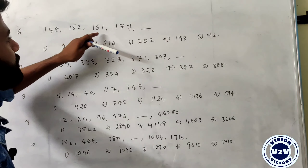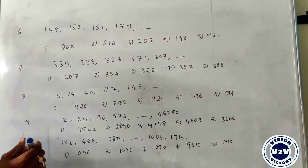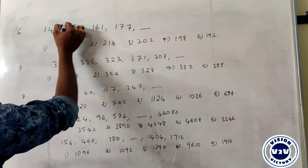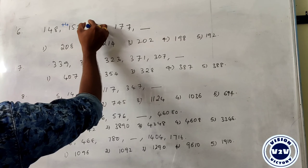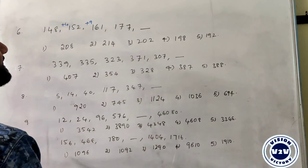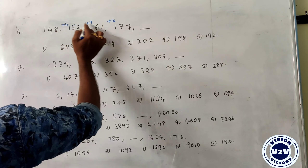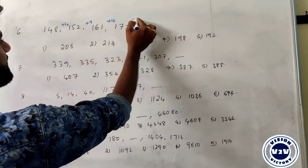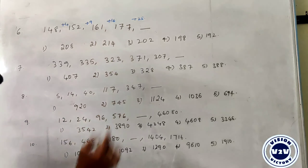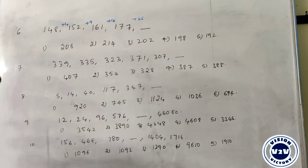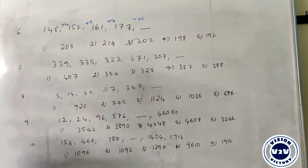Next: 148, 152, 161, 177. These are mirror numbers. The differences are plus 4, plus 9, plus 16 — that is 2 squared, 3 squared, 4 squared. Definitely next is 5 squared = 25. So 177 plus 25 equals 202. The answer is 202.